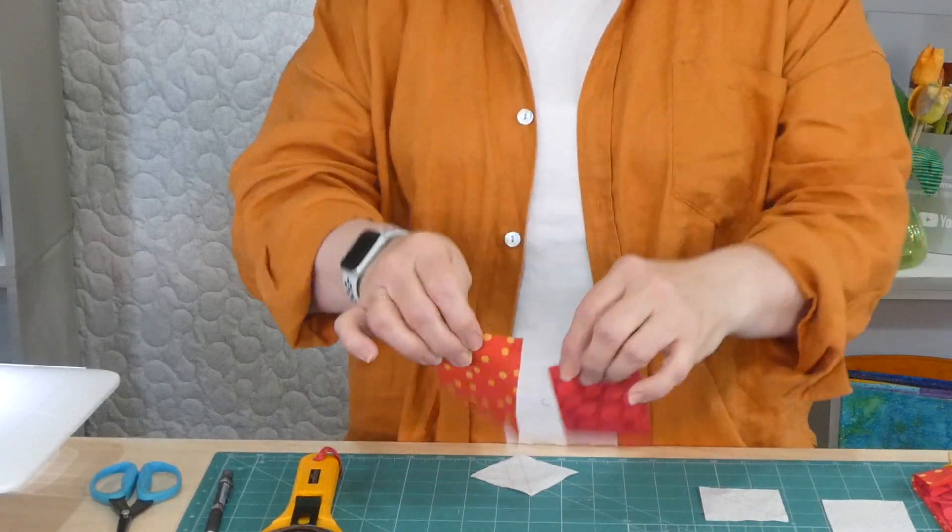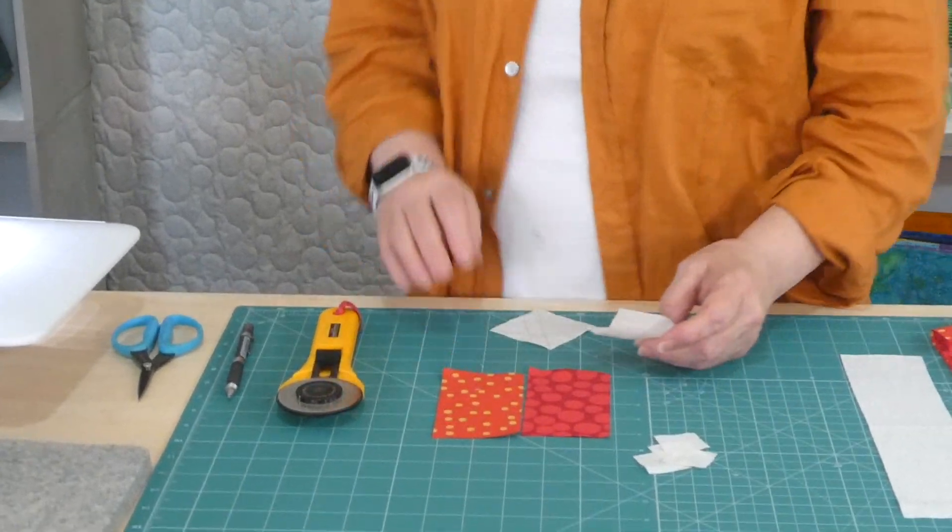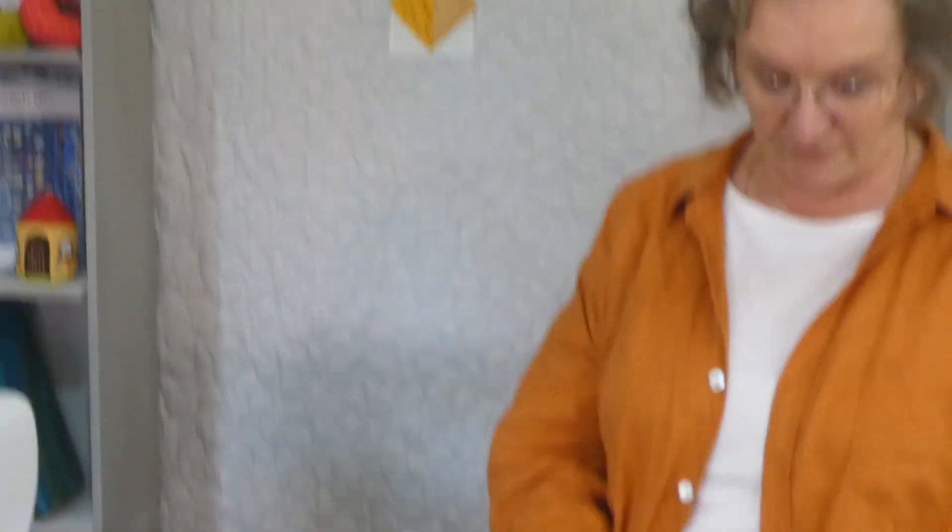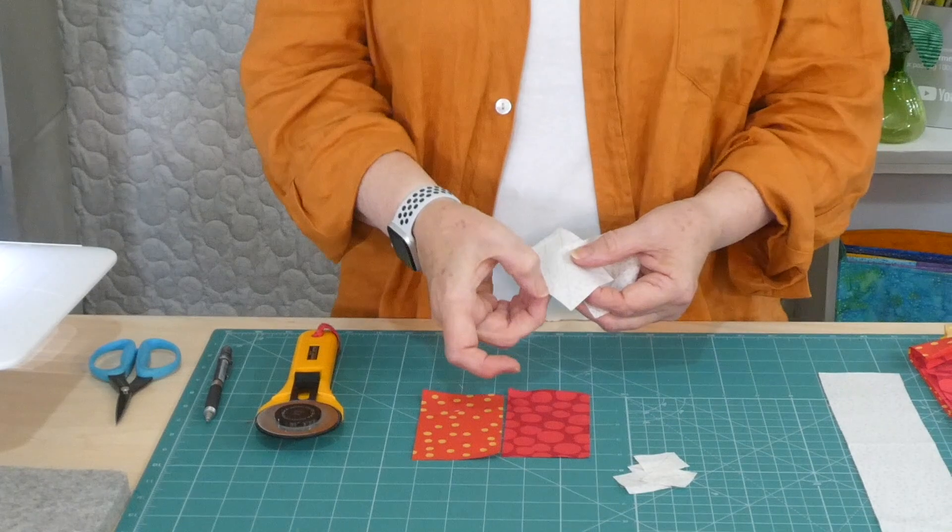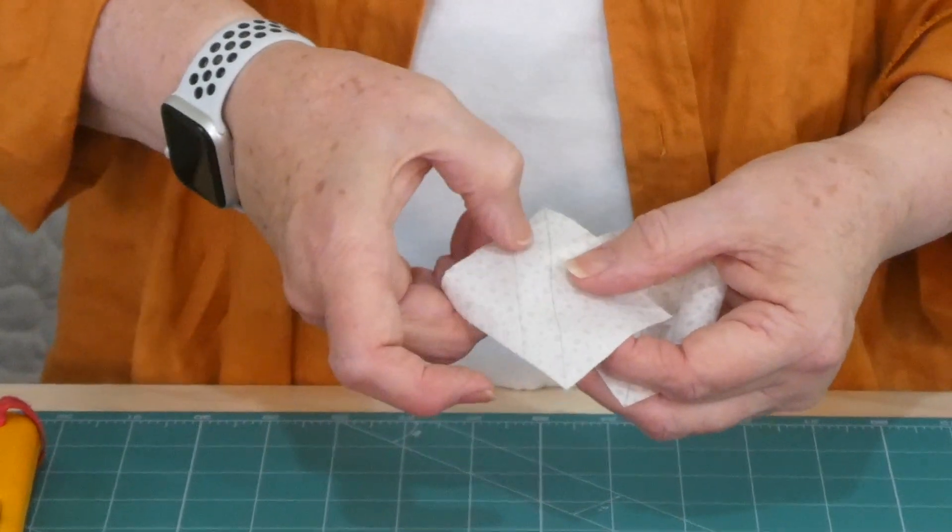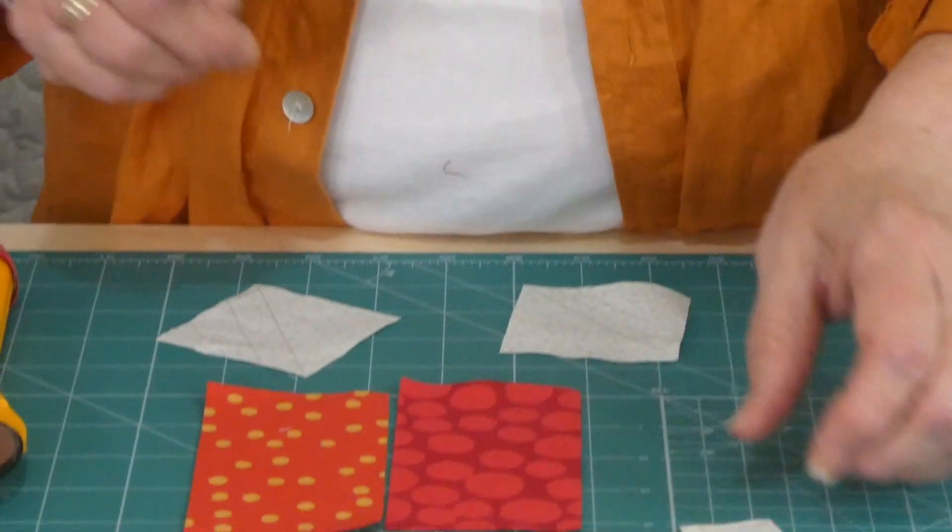You just need a two and a half inch wide strip that's four and a half inches long to make them as I'm making them today. Then for this lower corner down here, you need a two and a half inch square of the background. I've already drawn a diagonal line on there and also another line half an inch away so that we can sew both lines, cut between, and then save this corner for another project.